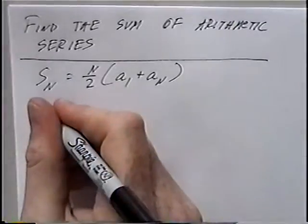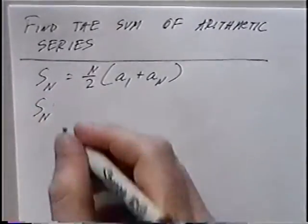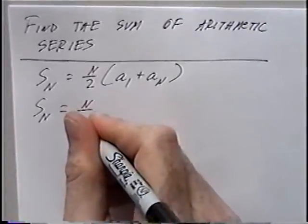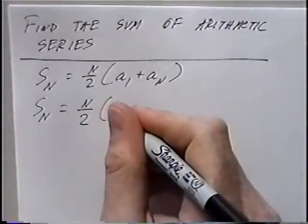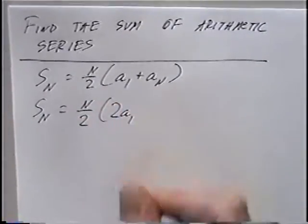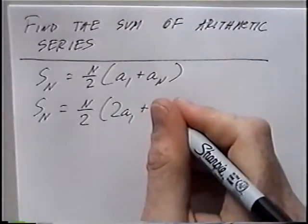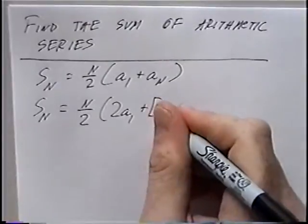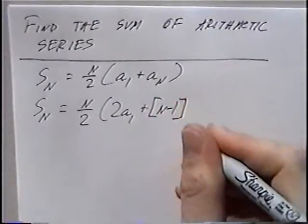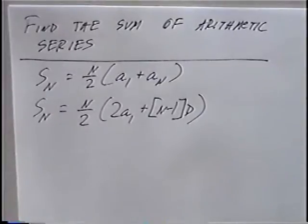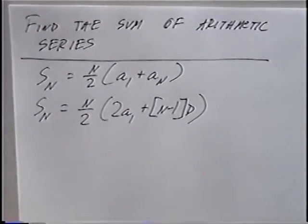A second formula that we can also use to find the sum, or S sub n, would be n over 2 times the quantity 2 times a sub 1 plus n minus 1 times d. Both formulas find the same value: the sum of the arithmetic sequence.